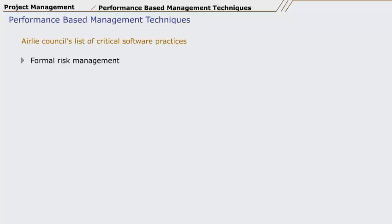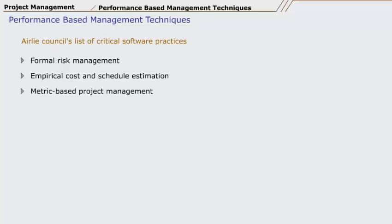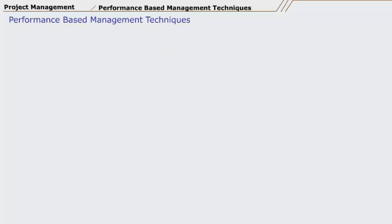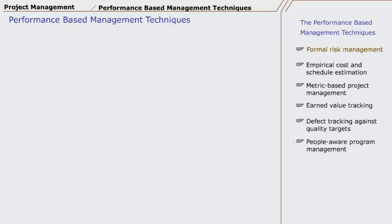The critical software practices include: Formal Risk Management, Empirical Cost and Schedule Estimation, Metric Based Project Management, Earned Value Tracking, Defect Tracking Against Quality Targets, and People Aware Program Management.